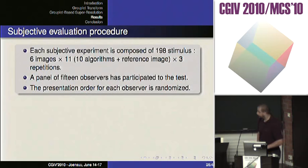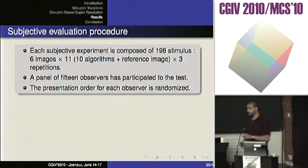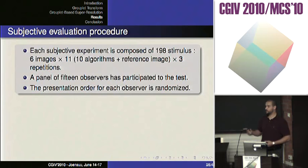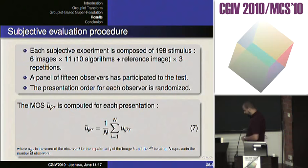A graphical user interface is presented in order to give the score of the image, with scores between 0 and 5 — from very bad to very good. Each subjective experiment was composed of 198 stimuli: 6 images, 11 algorithms. We used 10 algorithms from the state of the art, and also introduced the original images in the test — but observers did not know that originals were among the algorithms. We had 15 observers participate, and the presentation order was fully randomized. We computed the mean and some statistical analysis in order to reject outliers.